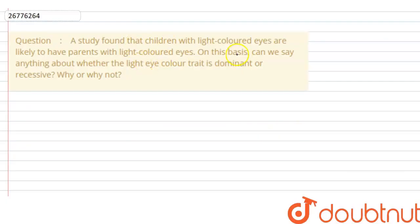A study found that children with light colored eyes are likely to have parents with light colored eyes. On this basis, can we say anything about whether the light eye color trait is dominant or recessive, why or why not? It is said that the parents' eye color is light, the children's eyes are also light.